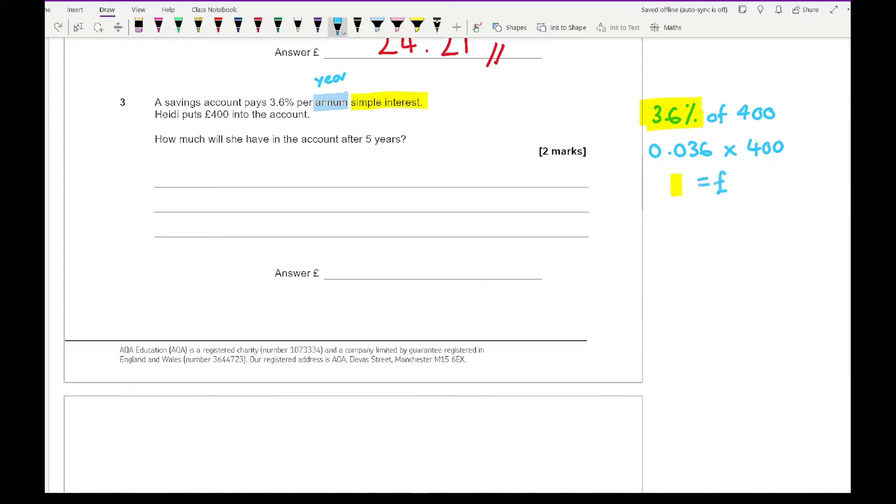That means Heidi is going to be getting £14.40 every year. To work out how much she'll have after five years we multiply the interest amount by 5. So 5 times 14.4 gives me £72. Then I've got to add that to the original amount which is £400, giving Heidi a nice tidy sum of £472.